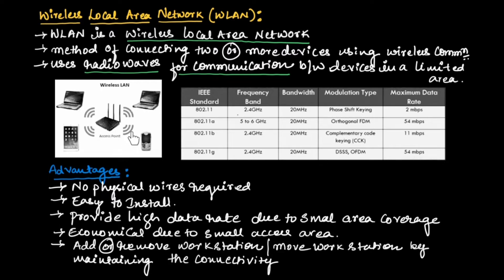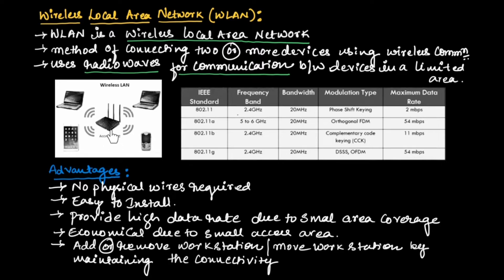As you can see in this diagram, we have different devices connected using a single access point. This access point provides connectivity for two or more devices using radio waves, without any wires. The access point is in turn connected to the internet provider using an ethernet wire.